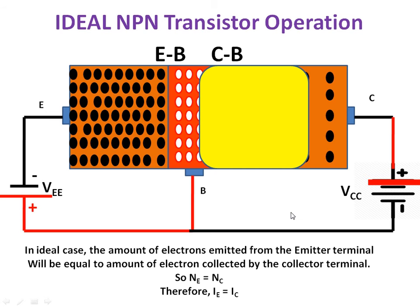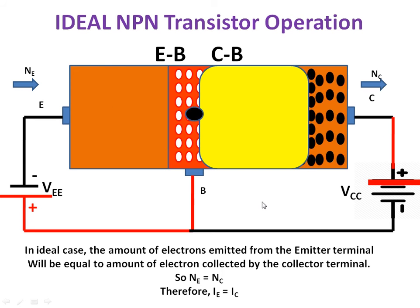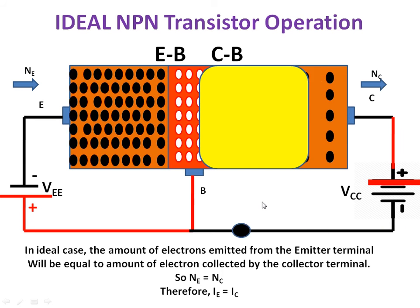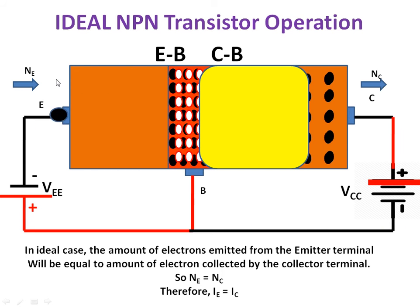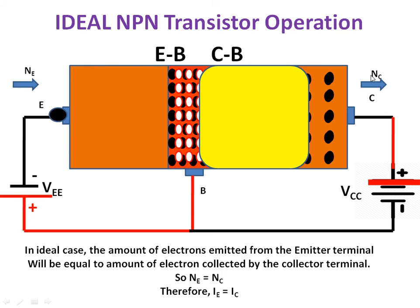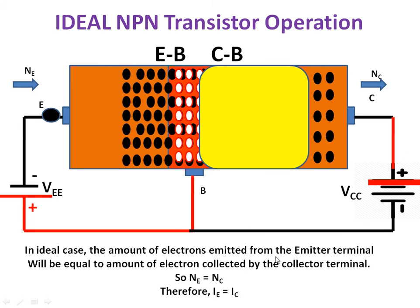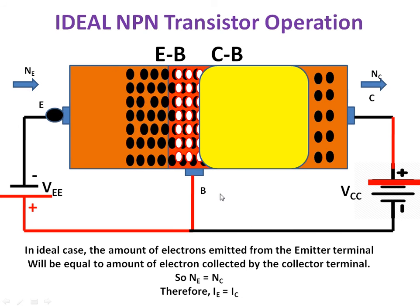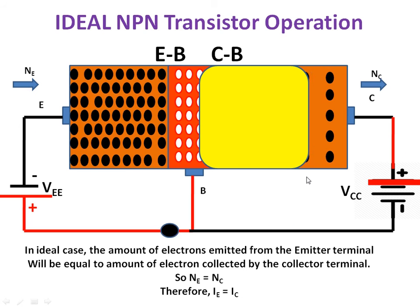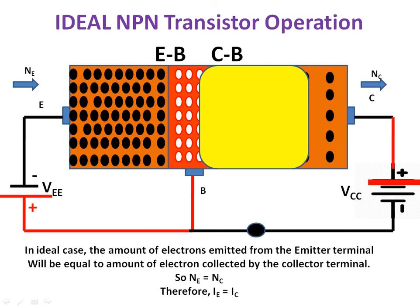For an ideal transistor, the number of electrons emitted by the emitter equals the number of electrons received by the collector terminal, so Ne equals Nc. We will see the remaining concepts in the next class.